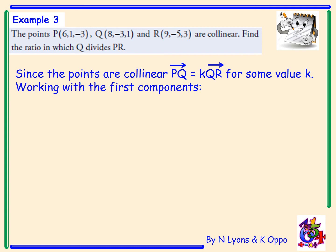Since the points are collinear, the vector PQ is equal to a constant K multiplied by QR. Working with the first components, P to Q is Q minus P, which gives us 8 minus 6, equals K multiplied by Q to R, which would be R minus Q. If we look at the first components, 9 minus 8. This will give us 2 equals 1K, so K must be 2.